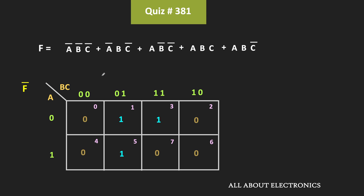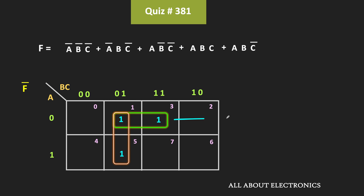Now let us try to minimize this function f̄. We can make a group of these two ones, and similarly we can make a group of these two ones. For the first group, variables a and c are not changing — the value of a is 0 and c is 1 — therefore this group represents ā·c. For the second group, variables b and c are not changing, and the value of b is 0 and c is 1 — therefore this group represents b̄·c. So the overall minimized function f̄ is equal to b̄·c + ā·c.